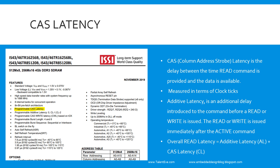There will be some delay associated with the time from when you issue a read command to when the data is actually available from the DDR chipset. This delay between issuing a read command and data becoming available is called column address strobe latency, which introduces delay in the read cycle and is a roadblock on speed.